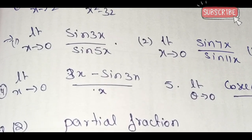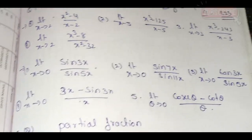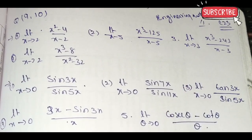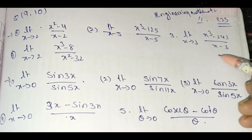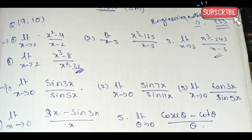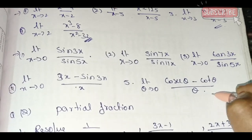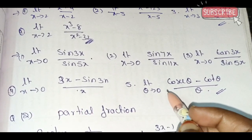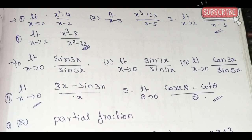You can practice these models. Questions 9 to 10 are limits — limits are compulsory models. If you have these models, you can prepare them easily. Another model is cos theta minus 4 theta by theta. If you don't have these models, you can't do this — check them out.